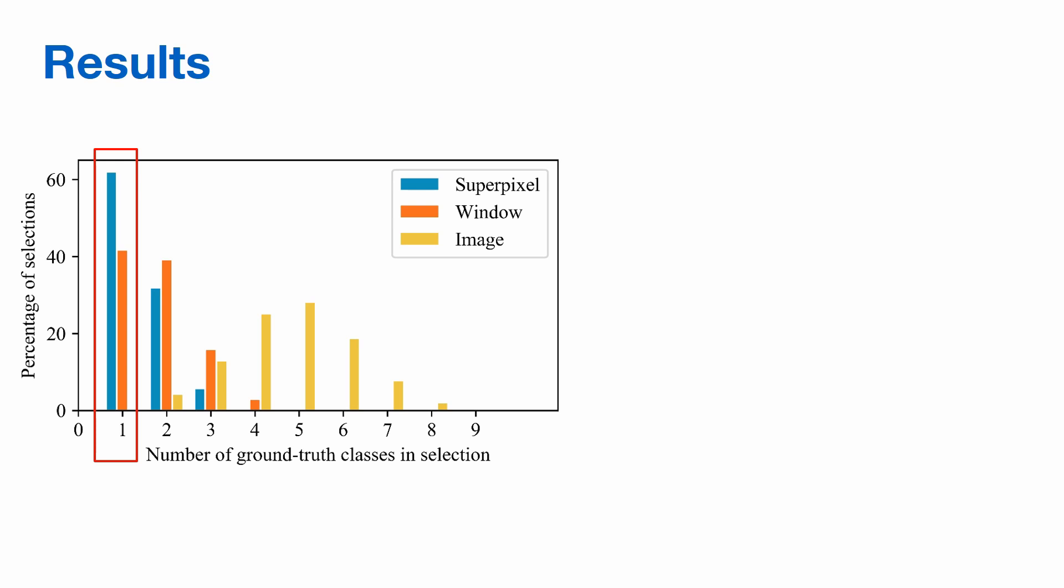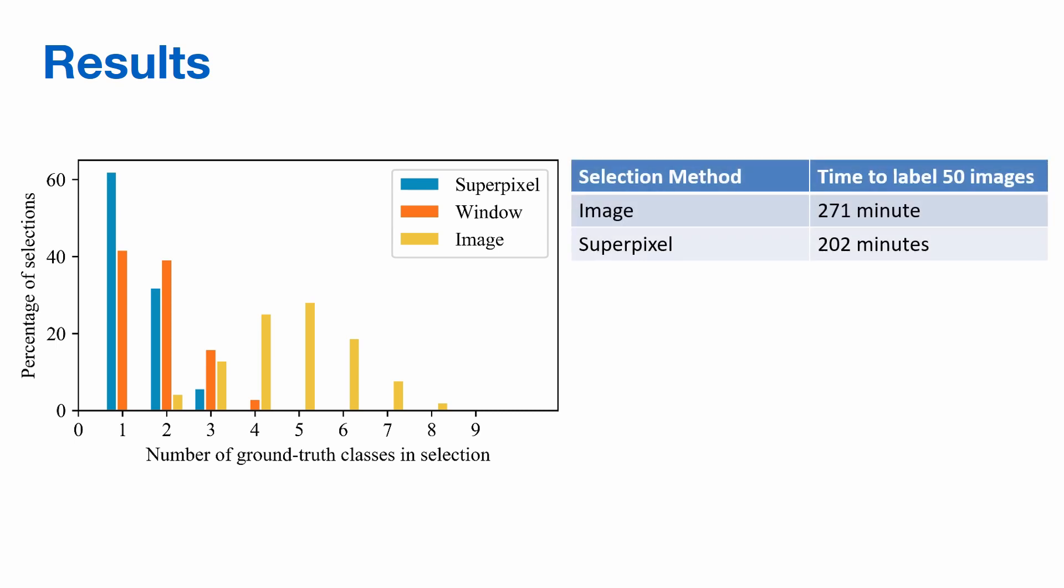We quantify this reduction in effort by comparing time taken to annotate 50 images and their equivalent superpixels and show that it takes 25% less time to annotate superpixel selections.